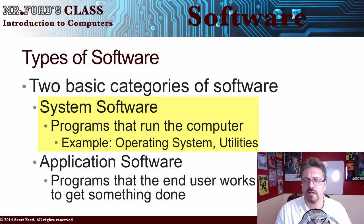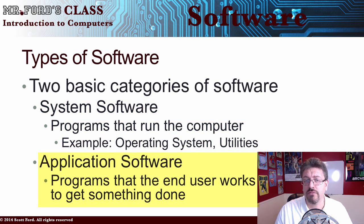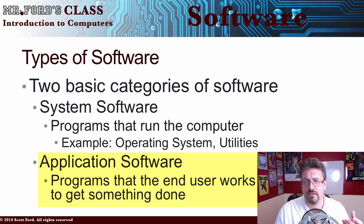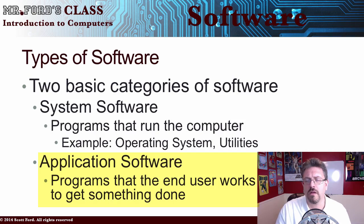We're going to take a look especially at operating systems later on in this video series. Your application software is what gets stuff done for you. It's the reason why you buy a computer — because you want applications to do things, whether it's Word documents, video recording, video editing, or posting. These different things require applications.